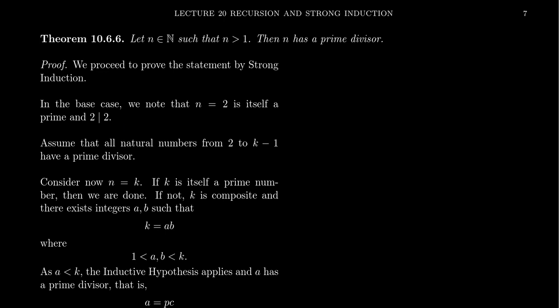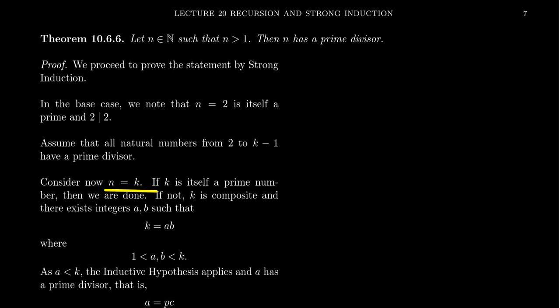We start with the base case N = 2. Two does have a prime divisor because two itself is a prime number — two divides two. For the inductive hypothesis, we assume that all natural numbers from two to k−1 have a prime divisor. Now let's consider N = k. Can we show that k has a prime divisor? If k is itself a prime number, then k divides k — just as two divides two — and we're done.